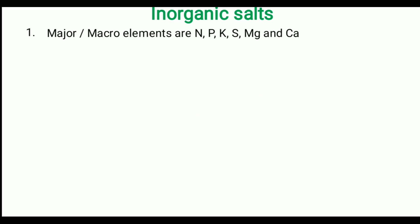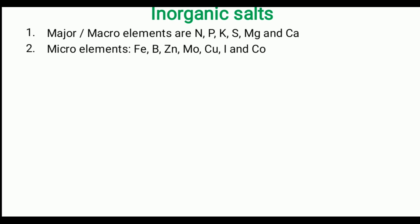Now we will see about the inorganic salt requirements. The macro elements consist of NPK — nitrogen, phosphorus, potassium — and calcium, magnesium, and sulfur for the plants. We have to supplement these nutrients in the form of inorganic salts. The micro elements such as iron, boron, zinc, molybdenum, copper, iodine, and cobalt are also essential for plant biochemical functions as well as some metabolic processes. Generally macro elements are added at millimolar concentrations and micro elements are added at micromolar concentrations.